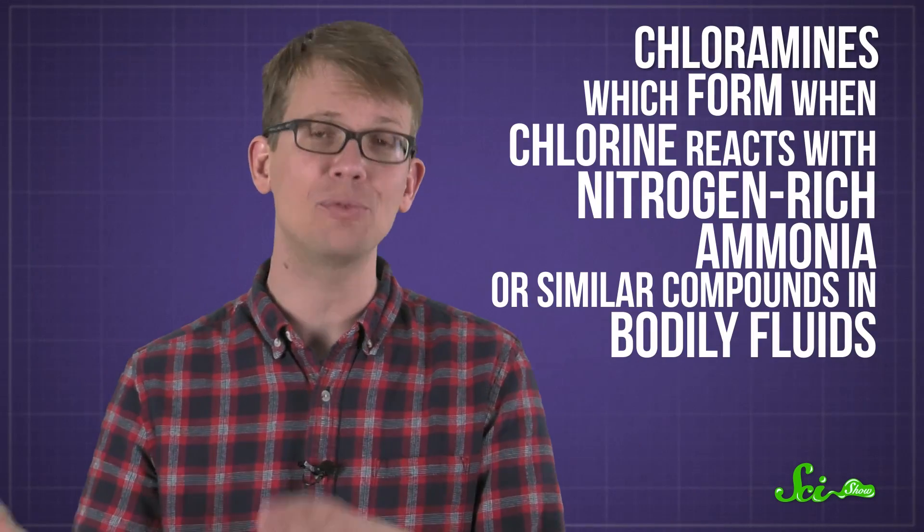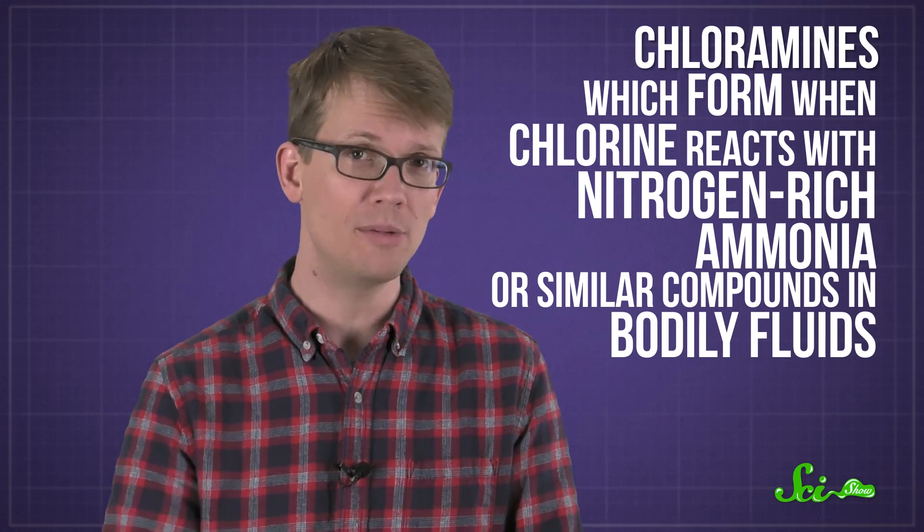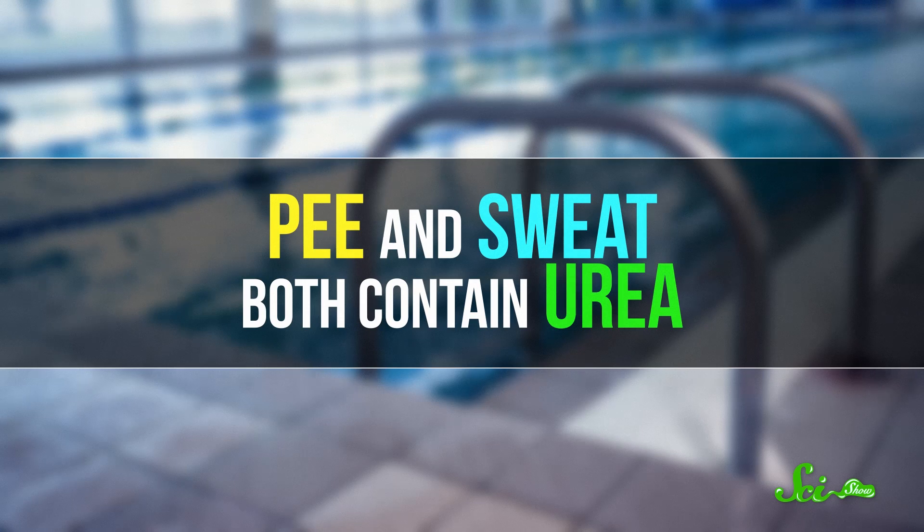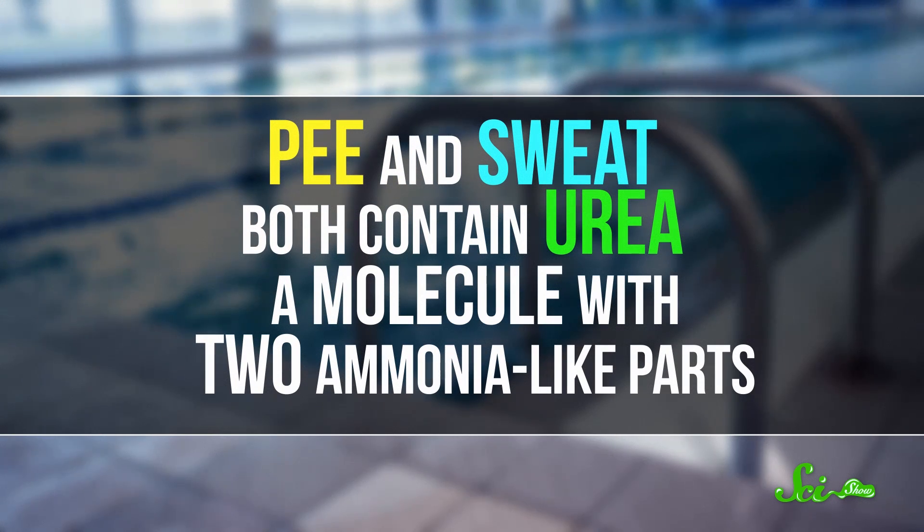To be fair, chlorine is still involved. The real offenders here are a class of chemicals called chloramines, which form when chlorine reacts with the nitrogen-rich ammonia or similar compounds in those bodily fluids. Pee and sweat, for example, both contain urea, a molecule with two ammonia-like parts.